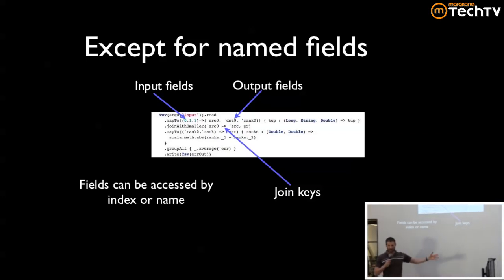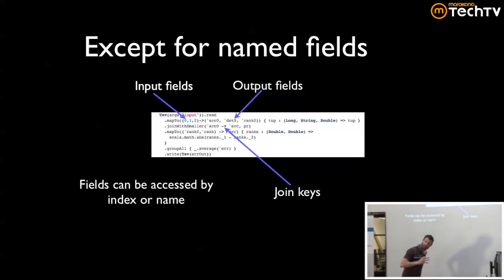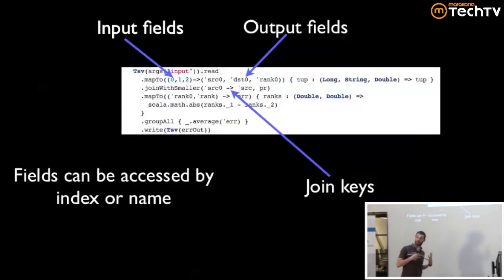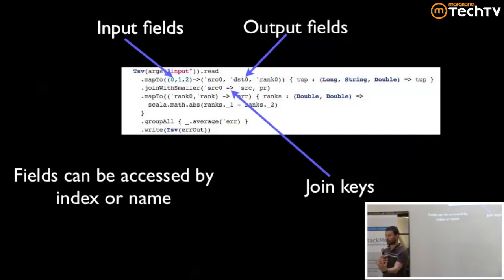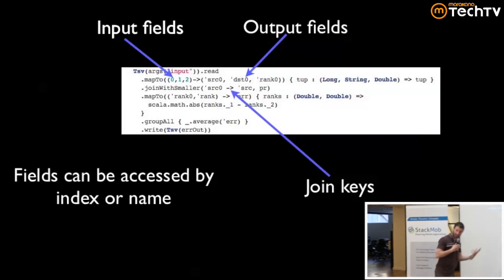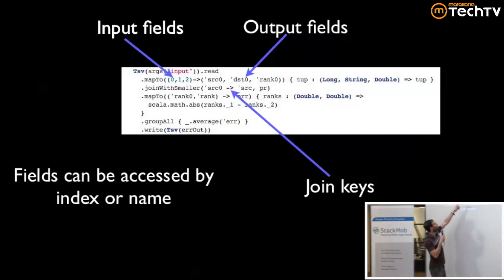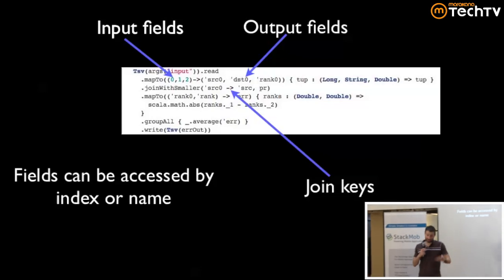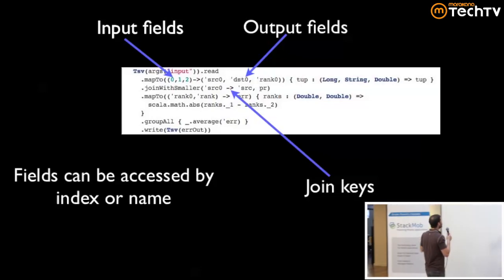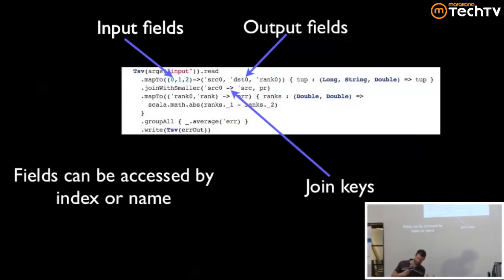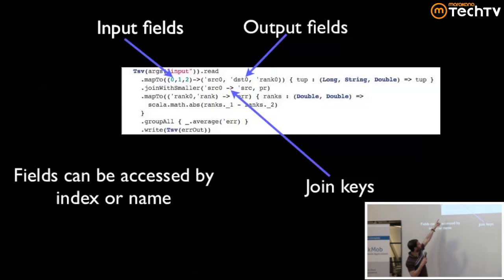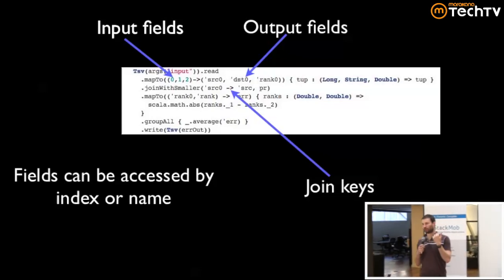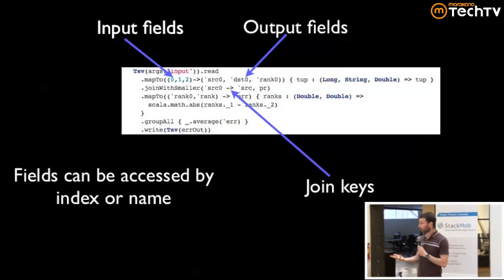Rather than just having a map, you're operating on a giant tuple in the background. When you say map, you tell it which fields you want to map on. It takes a subset of them, gives them to you, you map, give some back, and it changes the tuple. For example, by index you get the first three elements out of the tuple and map them onto tuples named source, destination, and so on.